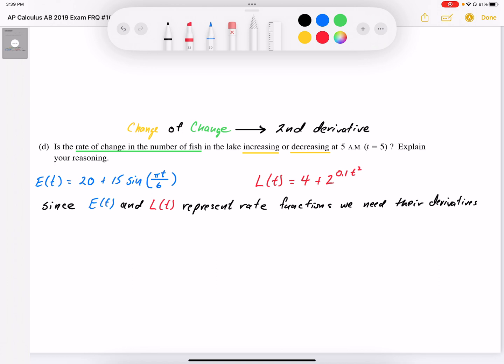We also want to know if it's increasing or decreasing, so when we put these two rates together, we want to see if the overall rate is positive or negative. If it's positive, it's increasing. If it's negative, it's decreasing.